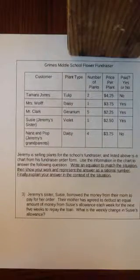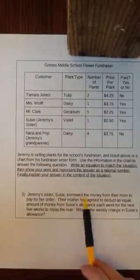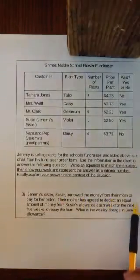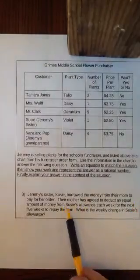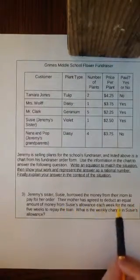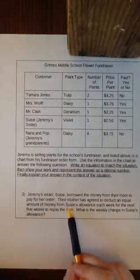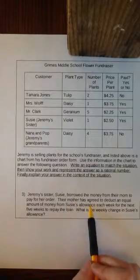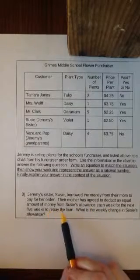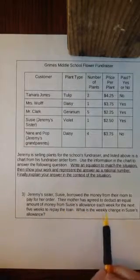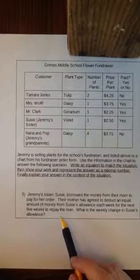Problem number three says that Jeremy's sister Susie borrowed money from their mom to pay for her order. Their mother agreed to deduct an equal amount from Susie's allowance each week for the next five weeks to repay the loan. What is the weekly change in Susie's allowance?